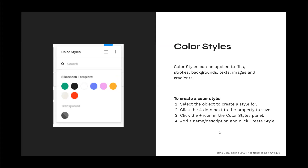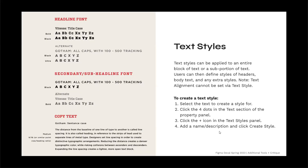To create a color style, select the object, click the four dots next to the property to save, click the plus icon in the color styles panel, then add a name and description and click Create Style. Text styles can be applied to an entire block of text or a sub-portion. Users can define different styles of headers, body text, and extra styles. Note that text alignment cannot be set via text style.